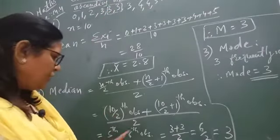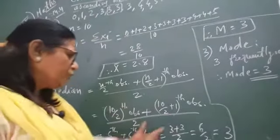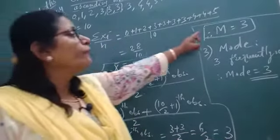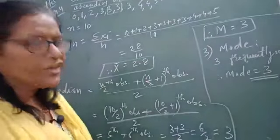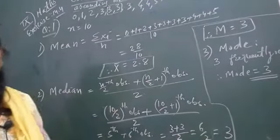So 5th observation is 3, 6th observation is also 3. So 3 plus 3, 6 upon 2, that is 3. So median of this data is 3. Now third, we have to find mode.